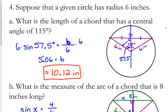We were told that a given circle has a radius of 6 inches, and that's going to apply to all the following scenarios. The first scenario asks, what's the length of a chord that has a central angle of 115 degrees?